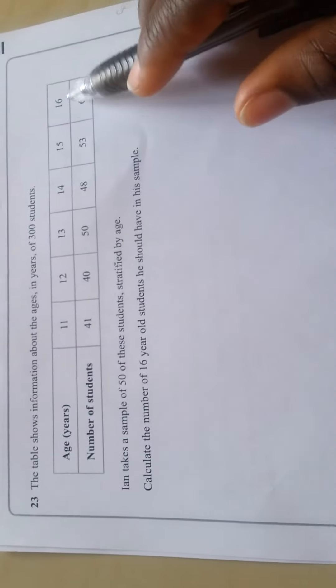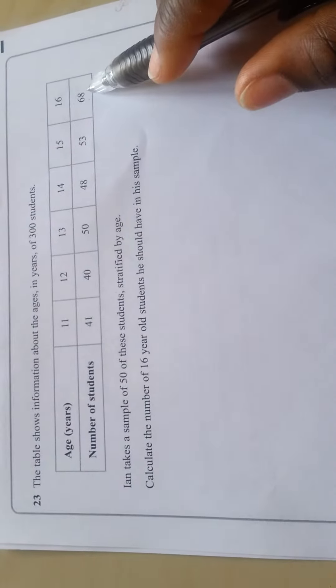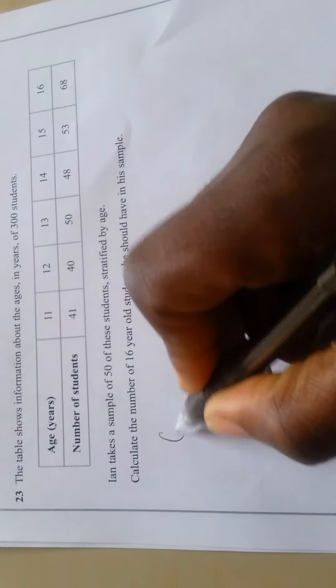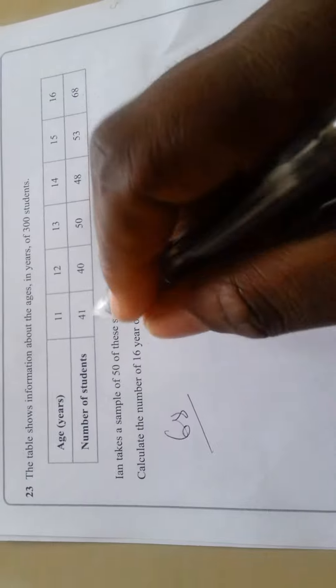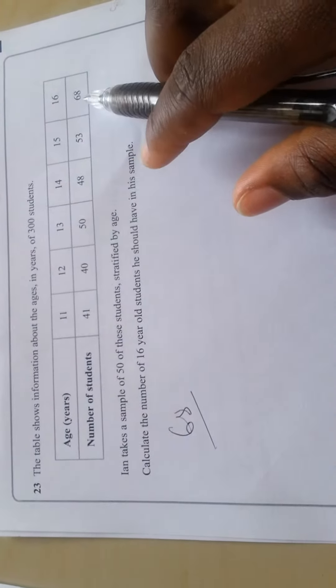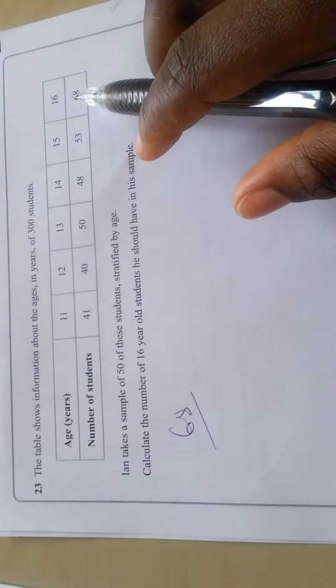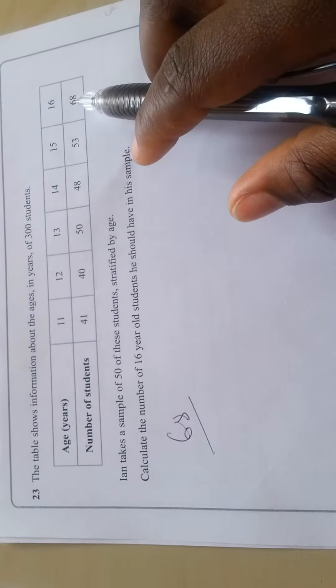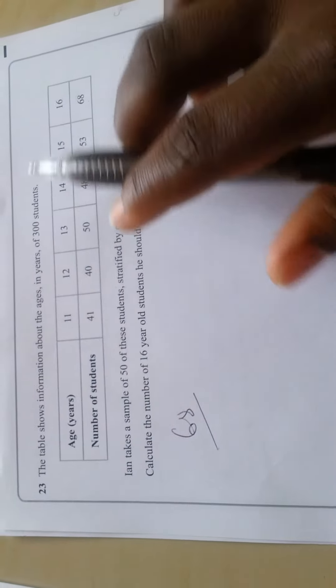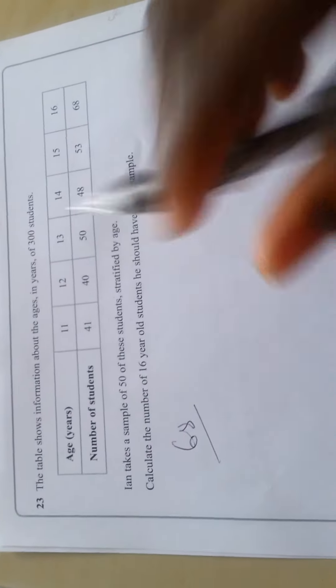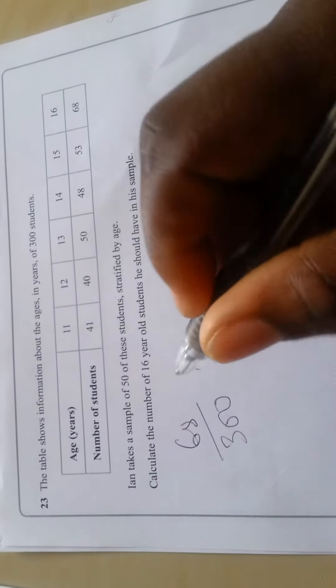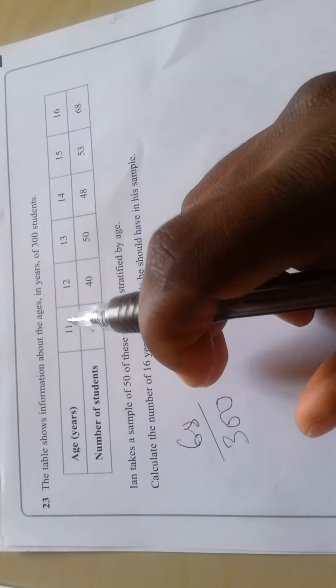See the number of 16 year old students in the sample. If we have 68 16 year old students in 300 students, we have 68 out of 300.